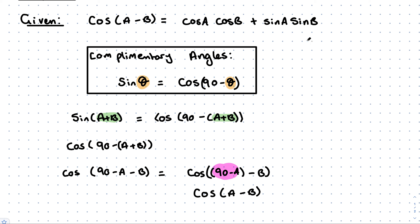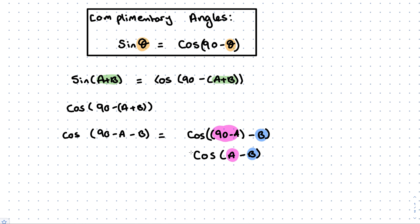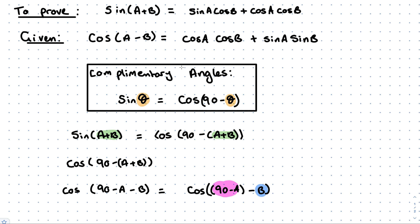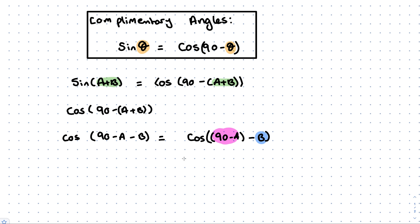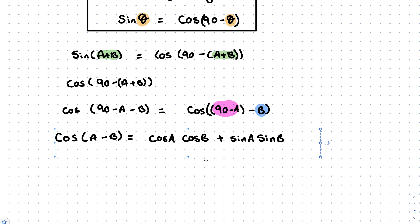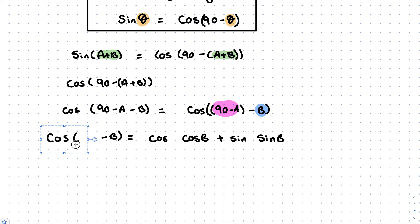What I know and have proven — and it's in the log tables — I'm going to use that. But instead of having a and b in the formula, I'm going to have (90 minus a) in the place of a, and b stays as b. So using that formula, every place that I see a, I'm going to replace it with (90 minus a), and every place that I see b, I'm going to replace it with b. So the first part becomes cos of (90 minus a) minus b, giving cos of (90 minus a).